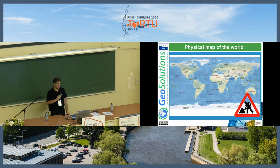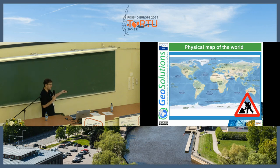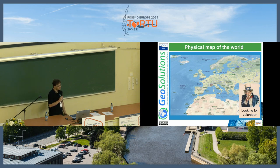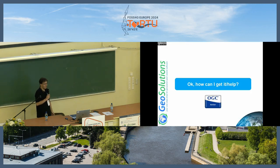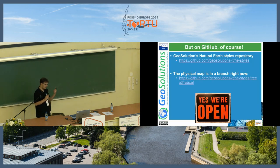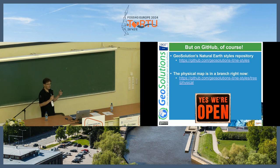As for the physical map, it's in the works — it's in a branch. It's basically a base raster map plus labels. It's been sitting there for a while, and I'm looking for someone interested in completing the work and merging it into the official version. The links are provided for both this map and the physical map version.